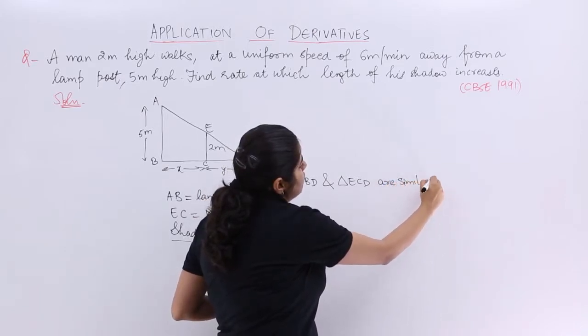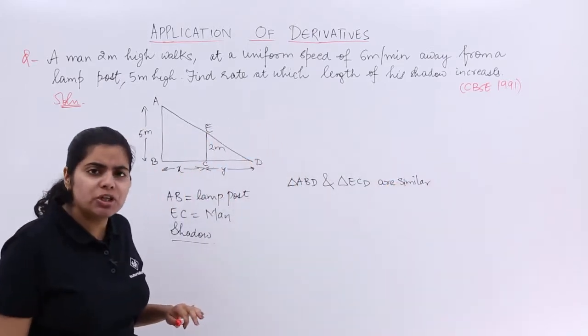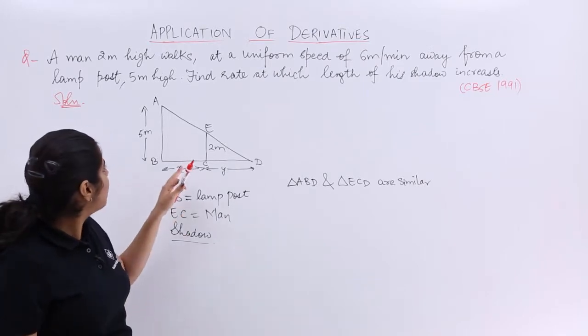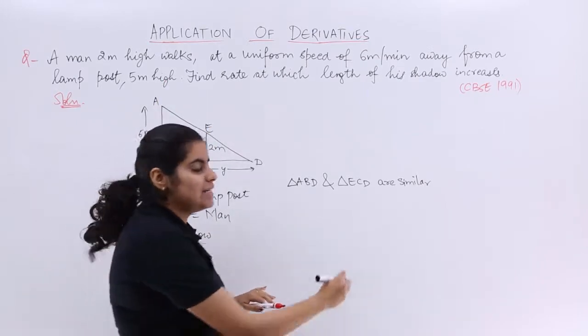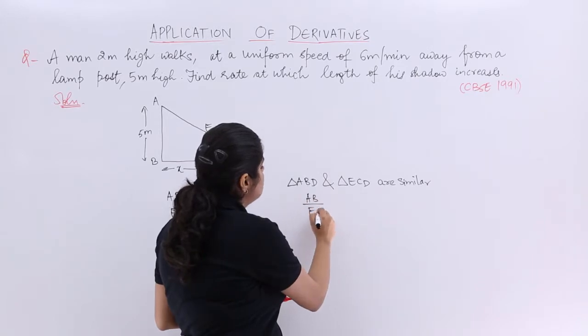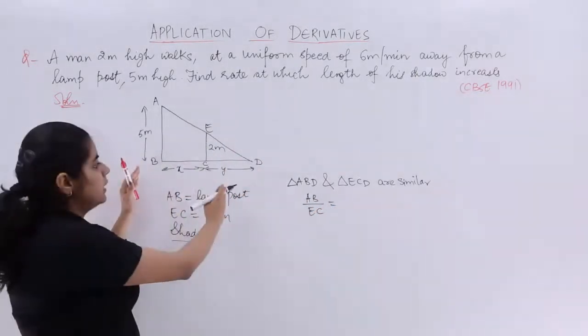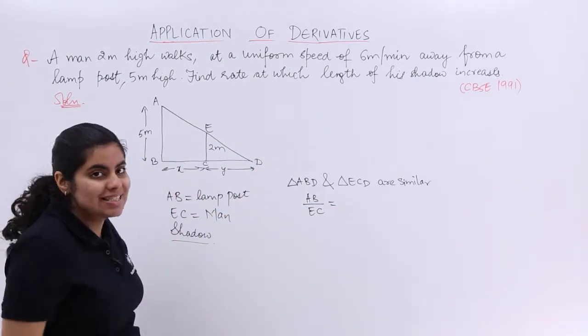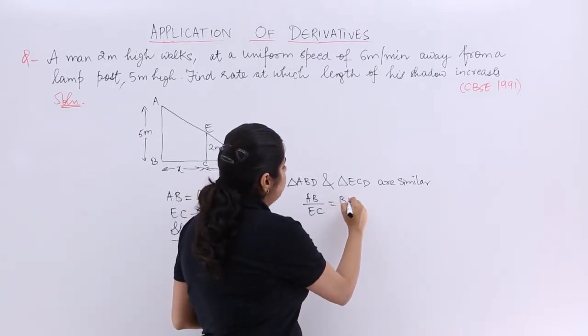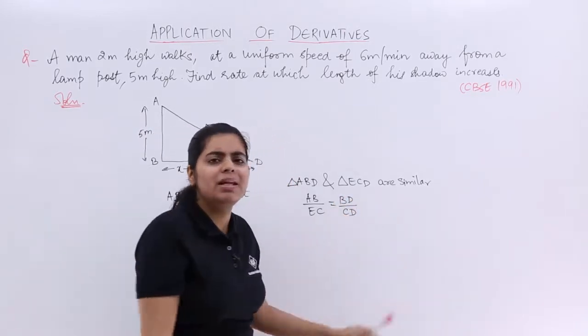So they are similar and by the property of similarity of triangles, I already know that AB upon EC equals BD upon CD, right? So it is BD upon CD as simple as that.